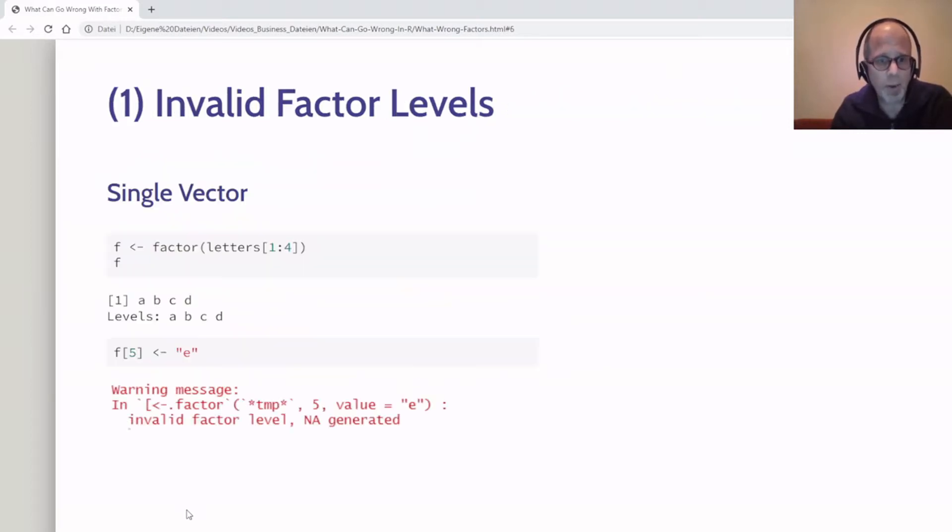Let's dive right in. For the first case, invalid factor levels, there's a simple example you can see here. We're working on a single vector, assigning the first four letters of the alphabet A, B, C, D. Then I want to add a fifth element in fifth position using base R square bracket indexing.